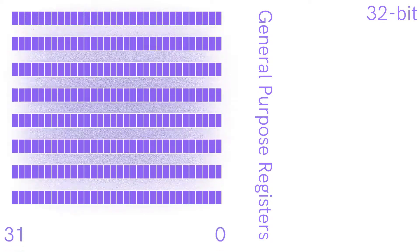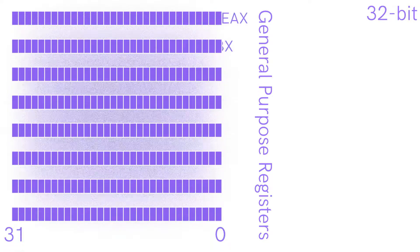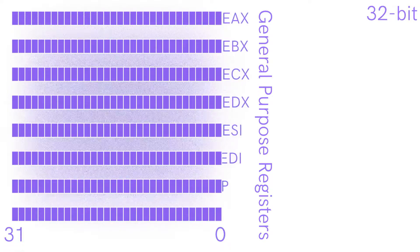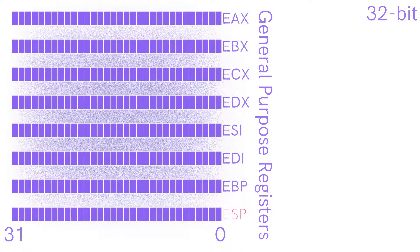There are 8 32-bit general purpose registers, however in practice only 7 are usable. The ESP register almost always contains the stack pointer, which holds the memory address of the top of the stack. This will be explained in another video.